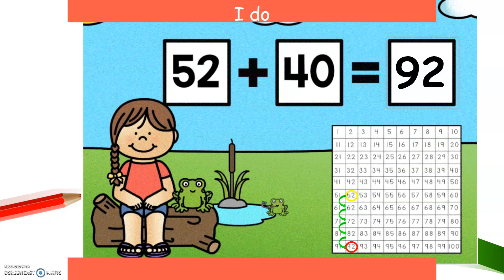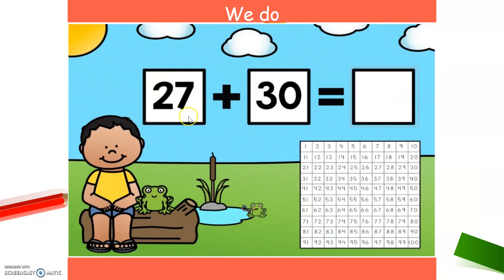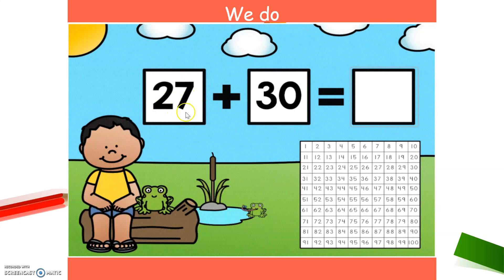Are you ready to do some with me? So here we have 27 plus 30. Which number do you think we should start with? Should we start with 27 that has two tens and seven ones? Or should we start with 30 that has three tens and zero ones? If you say 27, you're correct.